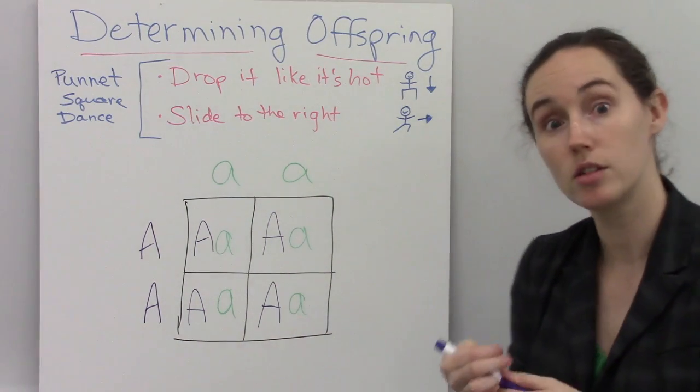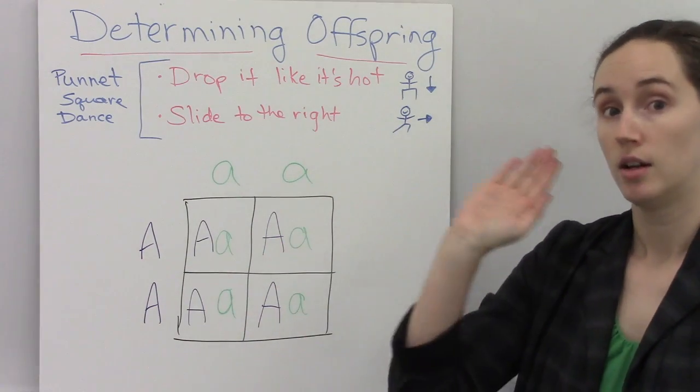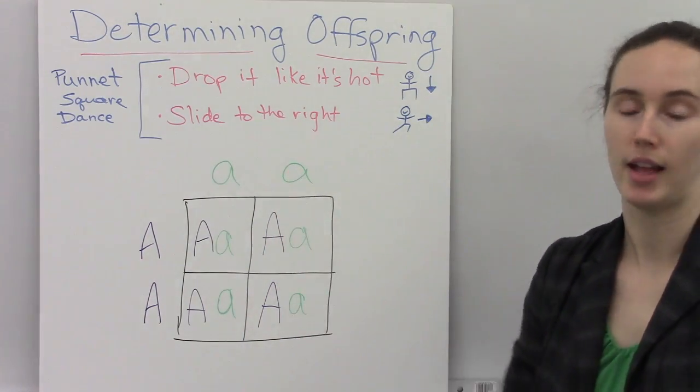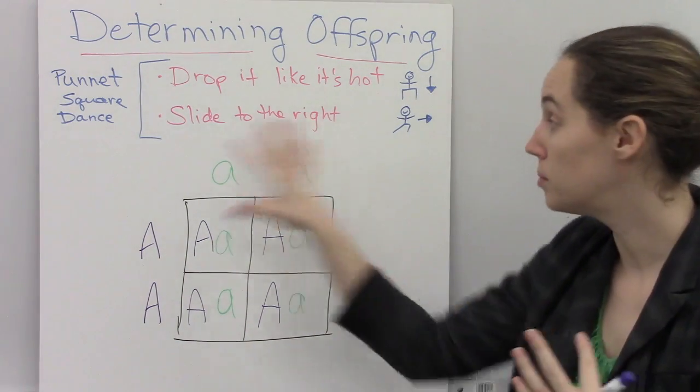So I finished filling in my Punnett square that shows the cross between my homozygous dominant mother and my homozygous recessive father. Now we're going to figure out, what does all of this mean?